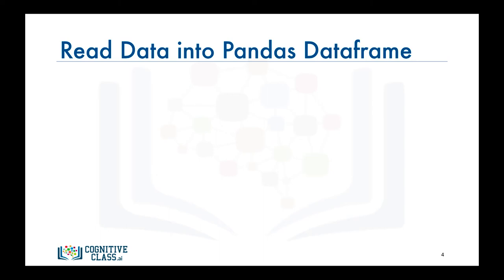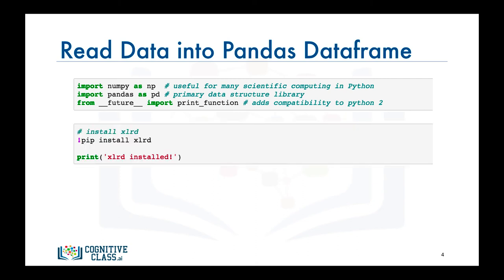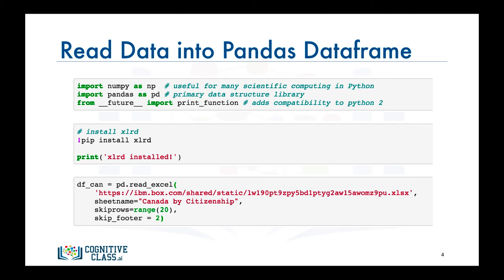Throughout this course we will be using pandas for any analysis of the data before creating any visualizations. In order to start creating different types of plots of the data, whether for exploratory analysis or for presentation, we will need to import the data into a pandas data frame. To do that we will need to import the pandas library as well as the xlrd library, which is required to extract data from Excel spreadsheet files. Then we call the pandas function read_excel to read the data into a pandas data frame, and let's name this data frame df_can. Notice how we're skipping the first 20 rows to read only the data corresponding to each country.